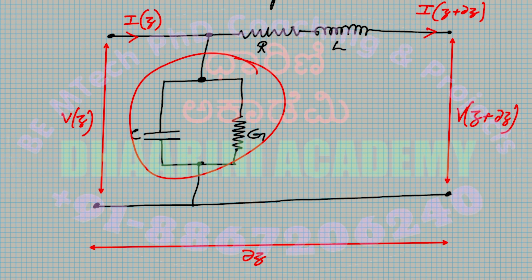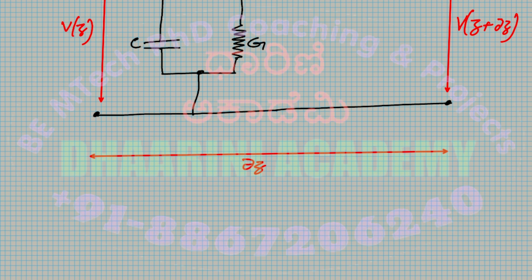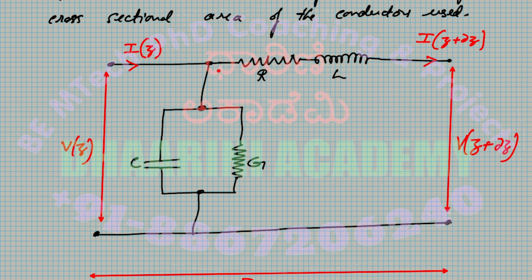Applying Kirchhoff's current law: the current entering the node at z is I(z), and currents leaving are I(z + δz) and the shunt branch current. So the shunt current equals I(z) − I(z + δz).